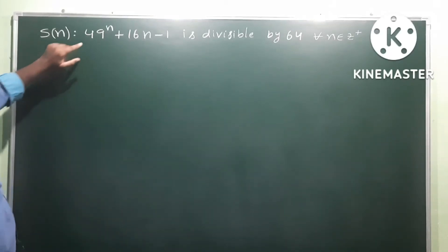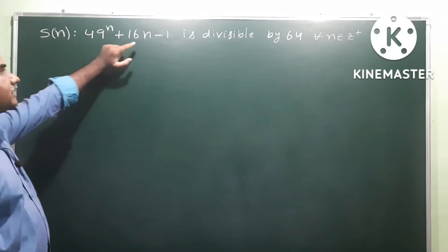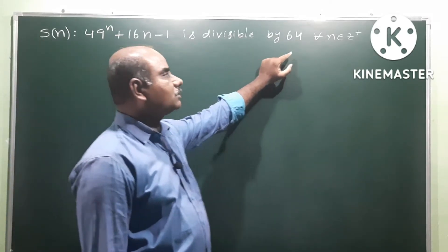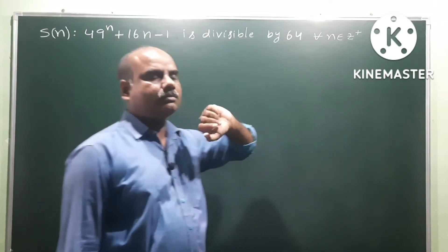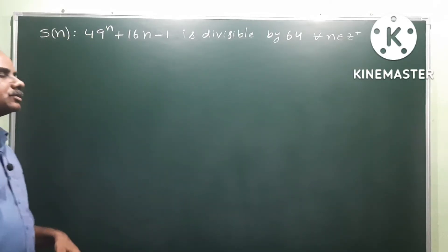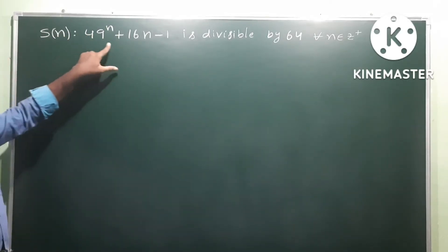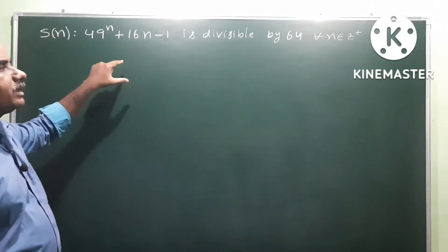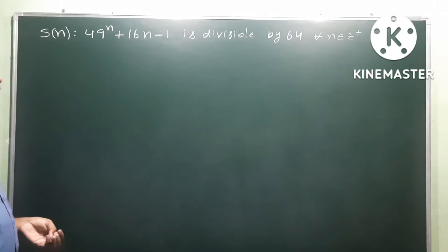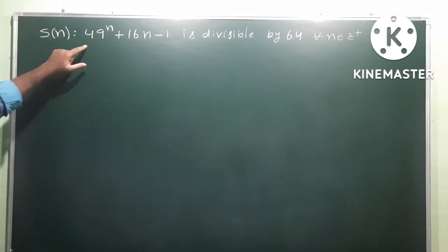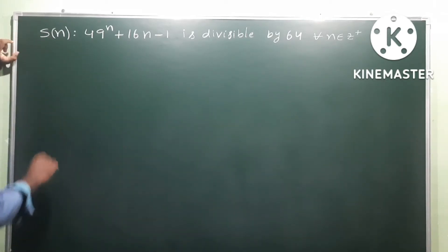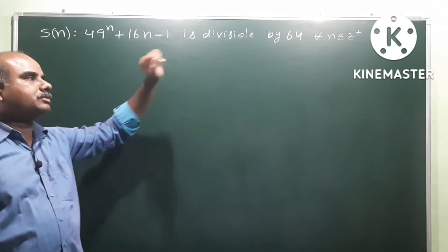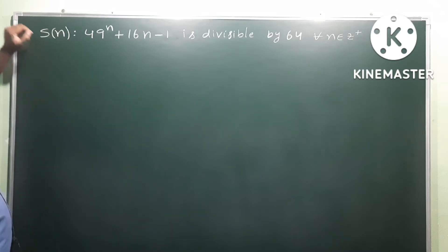We need to prove that 49^n + 16n - 1 is divisible by 64 for all n belonging to Z+, that is, all positive integers (natural numbers). We will prove this by the principle of mathematical induction.